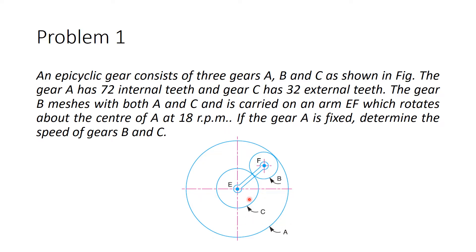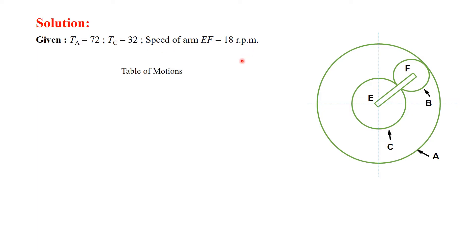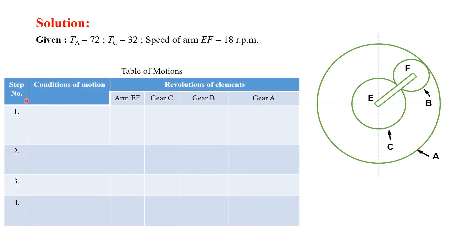Gear B meshes with both A and C, and is carried on an arm EF which rotates about the center of A at 18 rpm. If gear A is fixed, determine the speed of gears B and C. The solution: the number of teeth on A and C and the speed of the arm are given. We will use the table of motions approach, which involves three steps.